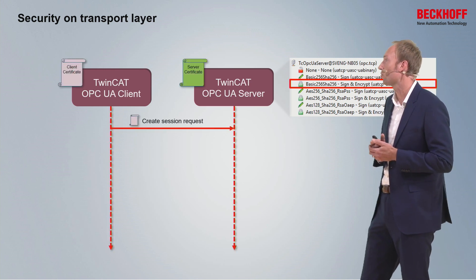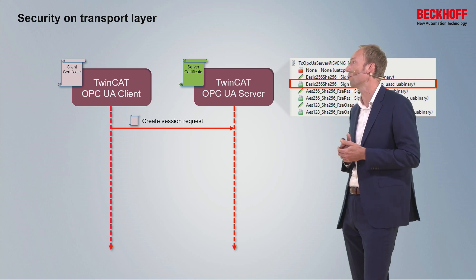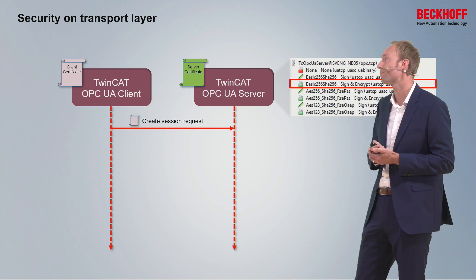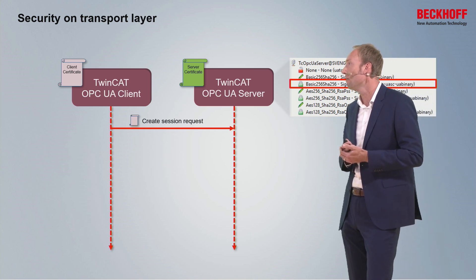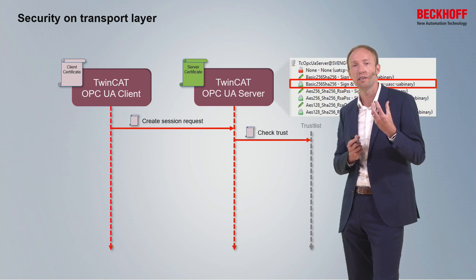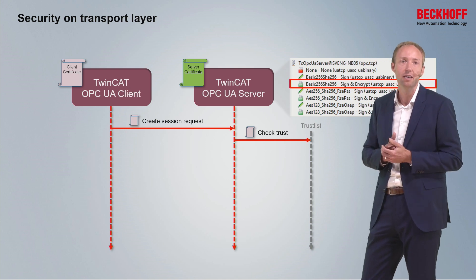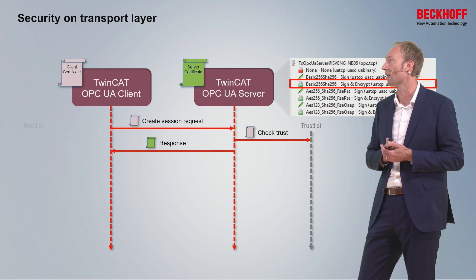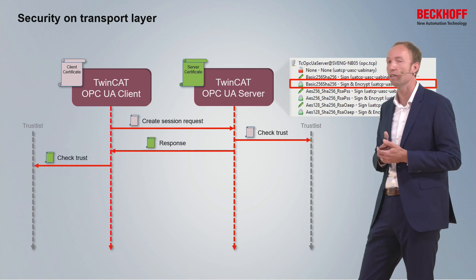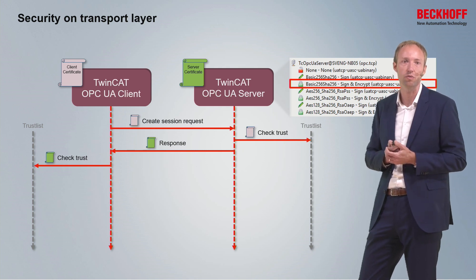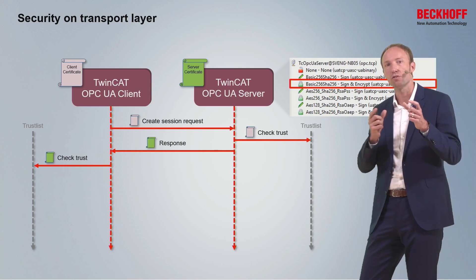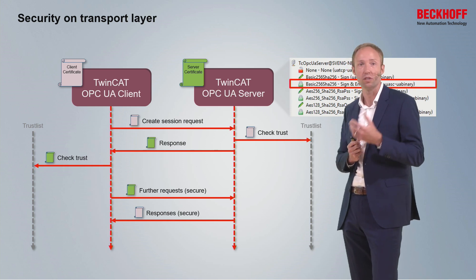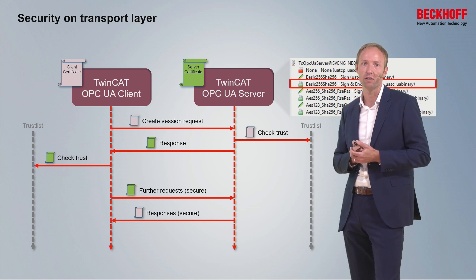Both client and server have their own certificates. When the OPC UA client creates a session, it sends its own certificate in the create session request. The server then checks its internal trust list to see if it trusts this client's certificate. If so, the server responds with its own server certificate, and the client checks its own trust list to verify the server. If both applications trust each other, the client secures further requests using the server certificate, and the server secures responses using the client's certificate.